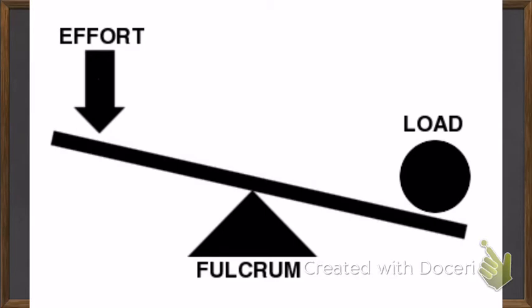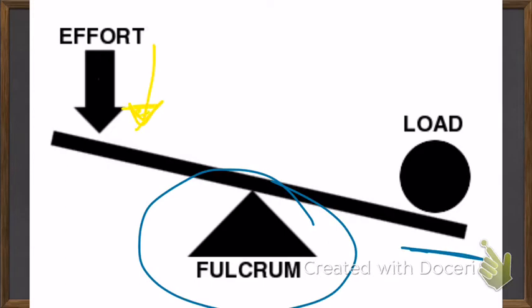Basically, we have our fulcrum down here. The reason for having this is we almost always have a load and an effort. The load is something we either want to move or get out of the way. If our effort goes down, the fulcrum is going to act as a pivot point and adjust the force, causing the load to go up. So if this is a rock we have to get out of the way, it is eventually going to move out of the way.